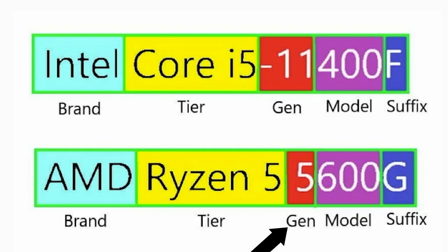The third component is the generation. Intel is currently on their 12th generation, while AMD is on their fourth desktop generation — they skipped the 4000 series for desktop. The fourth component is the model; the higher the number, the higher the performance. The last component is the suffix, which is something out of the ordinary that the CPU does. For Intel, a K designates overclockable CPUs. On AMD, something like a G means it has built-in Radeon graphics. I hope this outlined the breakdown of CPU part numbers for you.